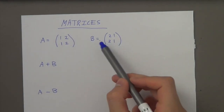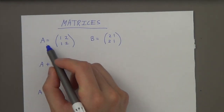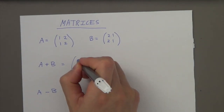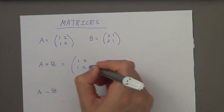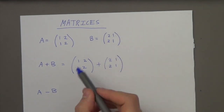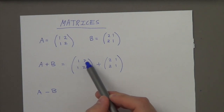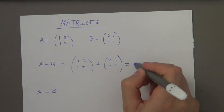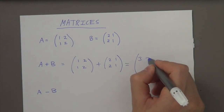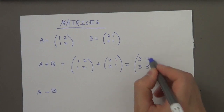So if I have two matrices like this, and if I wanted to add them together, I would just literally add the corresponding numbers. So 1 plus 2 gives me 3, 2 plus 1 gives me 3, 1 plus 2 gives me 3, 2 plus 1 gives me 3.